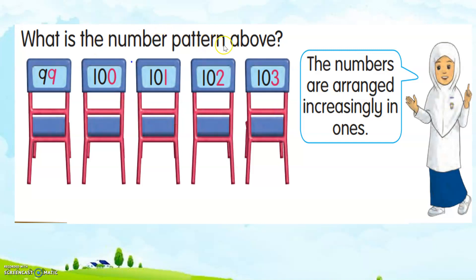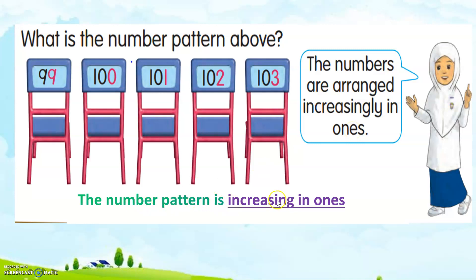What is the number pattern above? The numbers are arranged increasingly in ones. The number pattern is increasing in ones. That means the place value in the ones position — 9, 0, 1, 2, 3 — is changing. So we should recognize the increasing values here: 99 plus 1 is 100, 101, 102, and 103. The number pattern is increasing in ones.